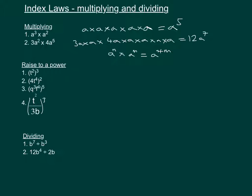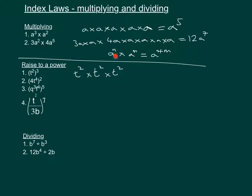If we look at raising something that's got a power to a power — for example t squared to the power of 3 — that means t squared times t squared times t squared. Using the multiplication rule, we just add all of the 2's together, so we get t to the power of 6.